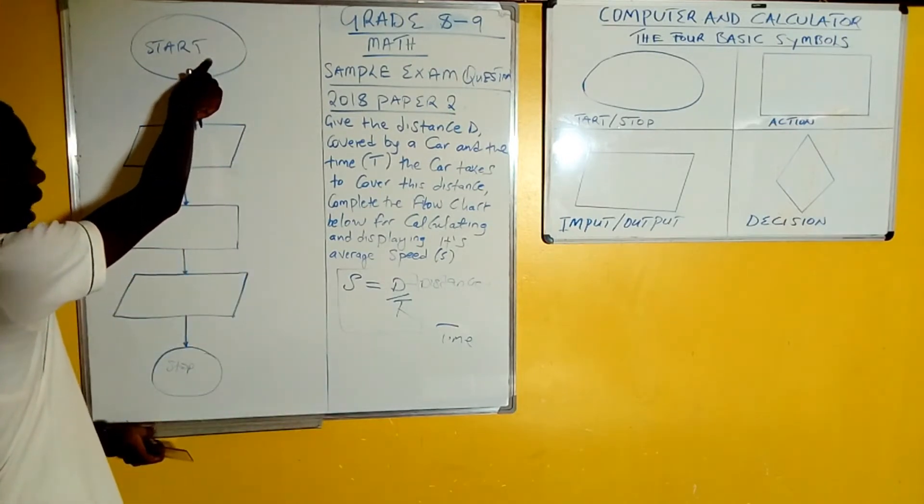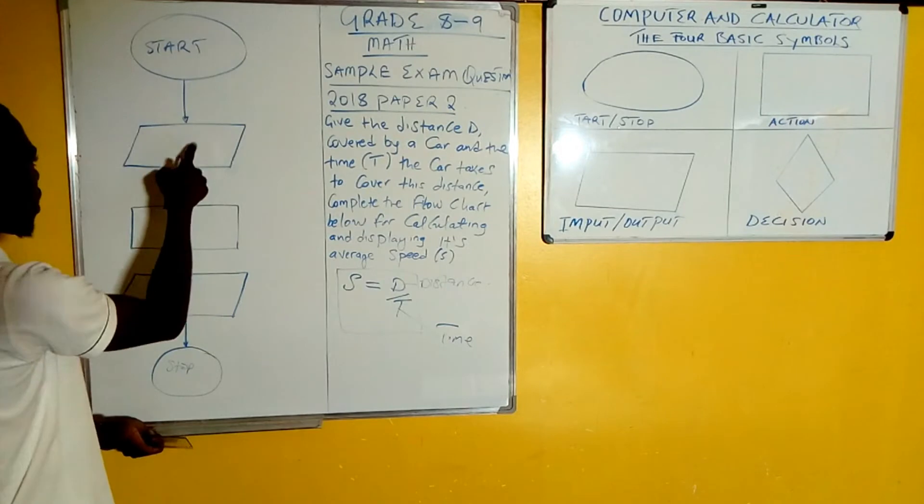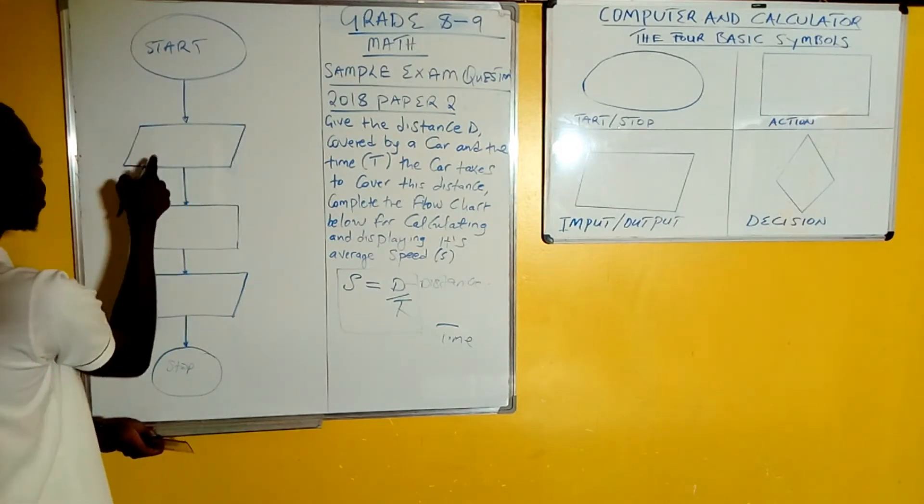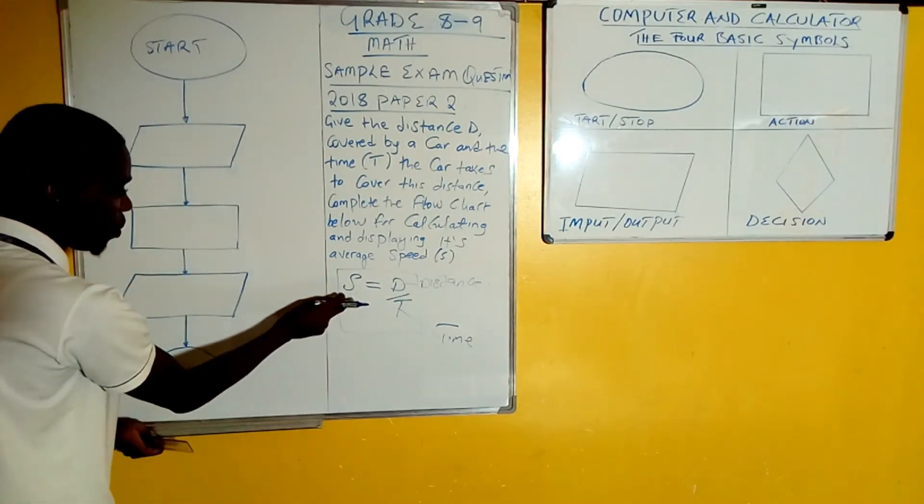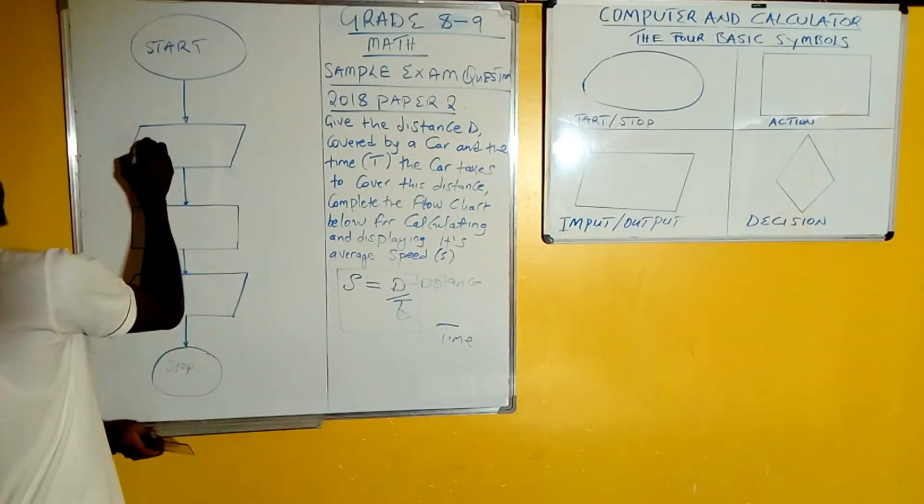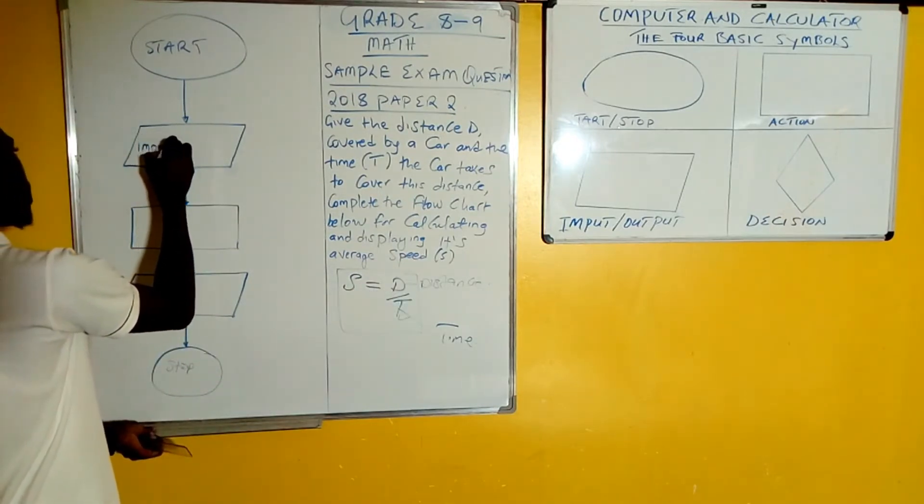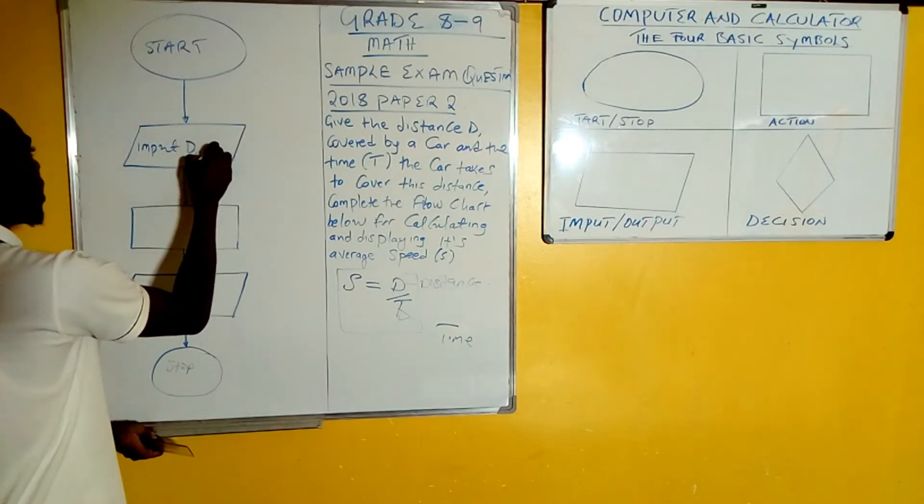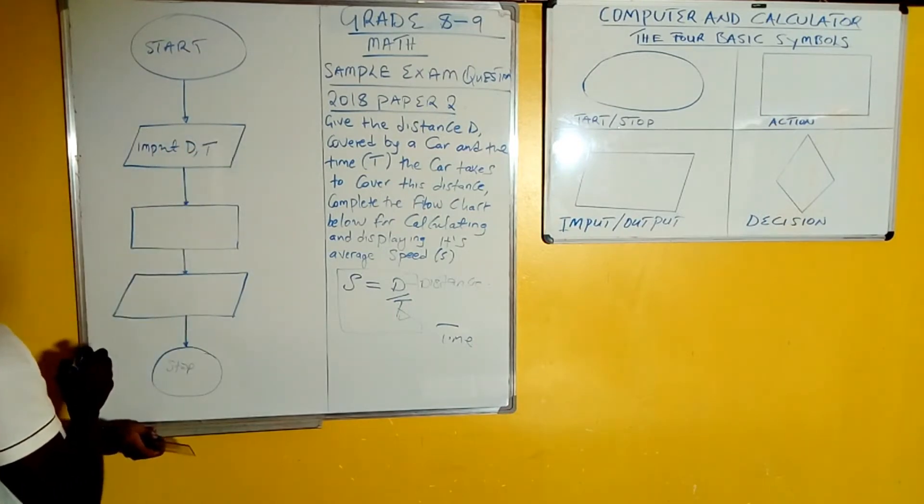This one means the start - it has been started for you. This one is the input. What do you need to input in order to get the speed? You need d and t, so you are going to write in here: input d, t.